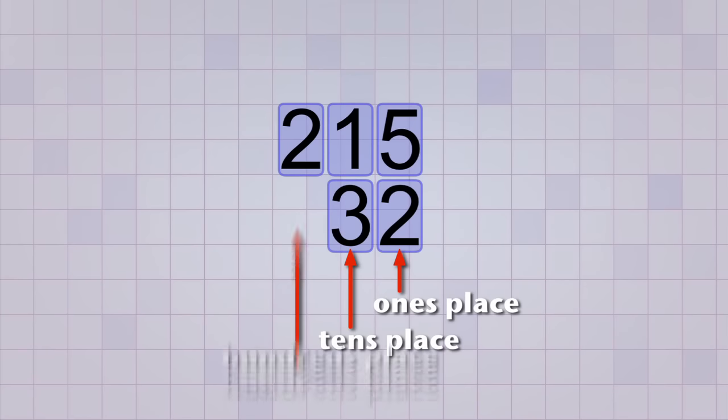The tens places are also lined up, and the hundreds places. Well, the bottom number doesn't have a digit in the hundreds place, but that's okay. We can just imagine a zero there as a placeholder, but we don't have to show it.